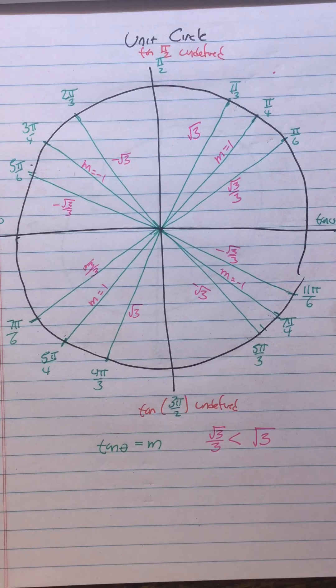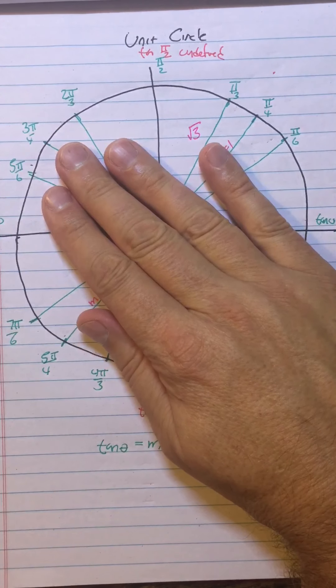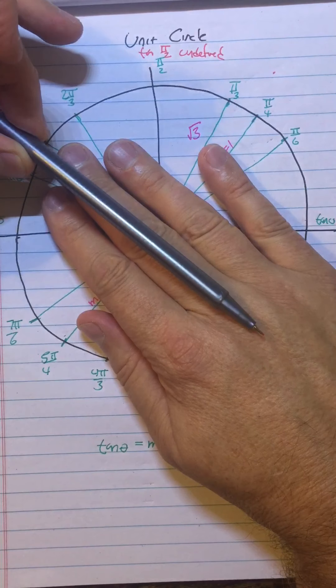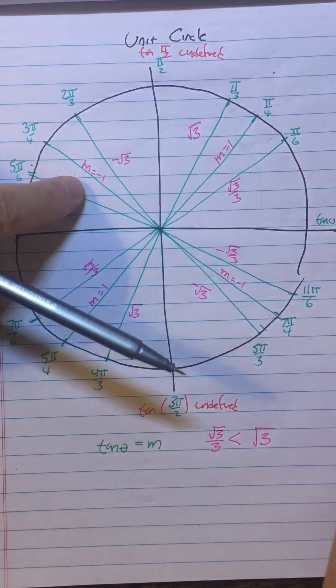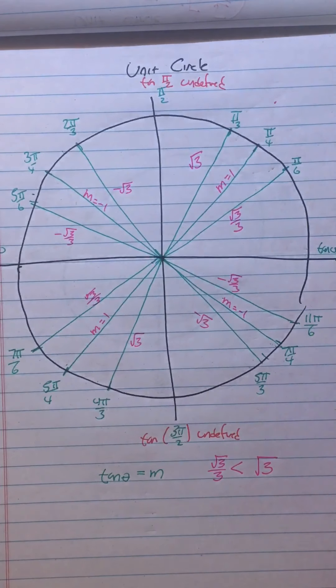Somebody asked me, what's the tangent of 3π/4? I would go, oh, 3π/4, that's a 45-degree angle going down, so the slope is -1.